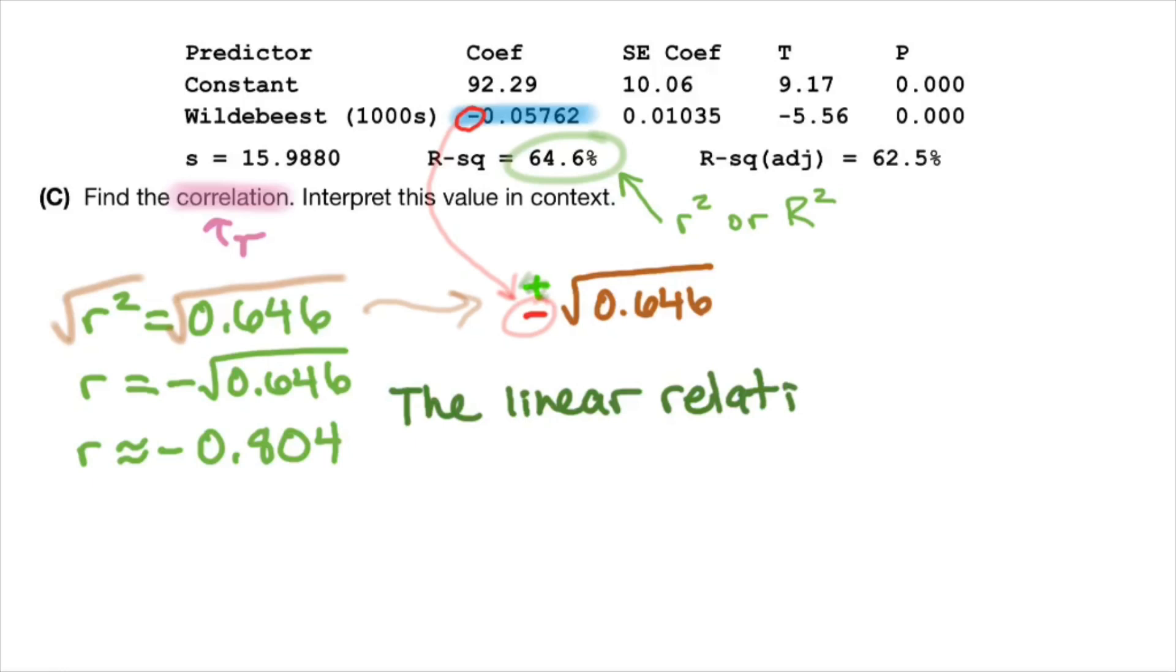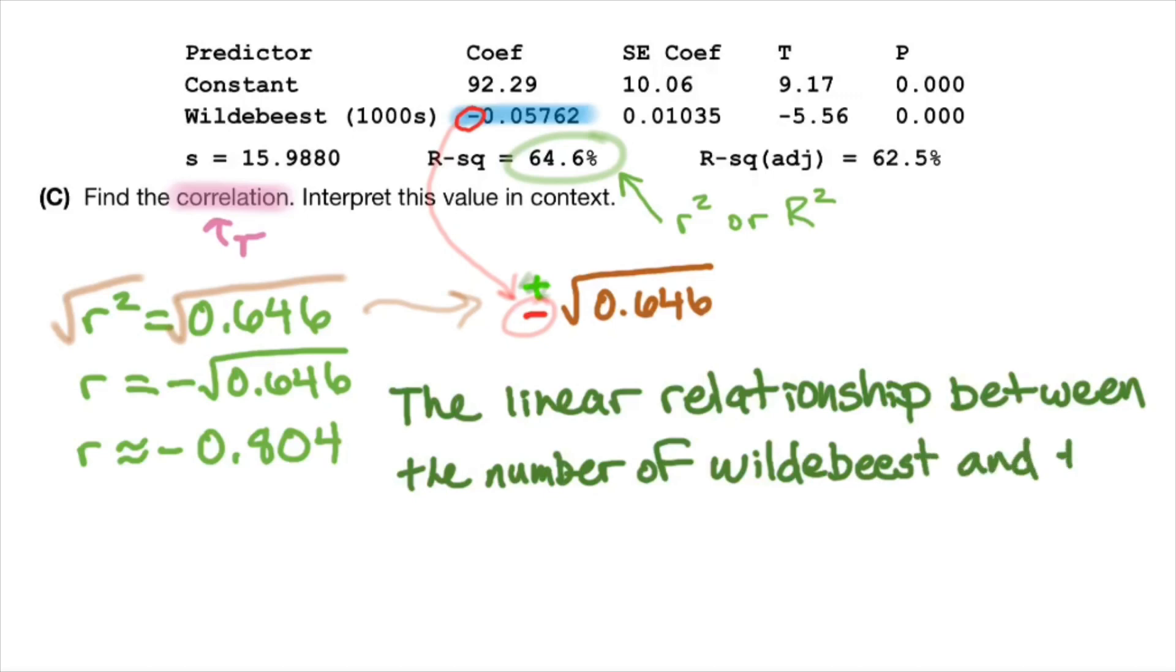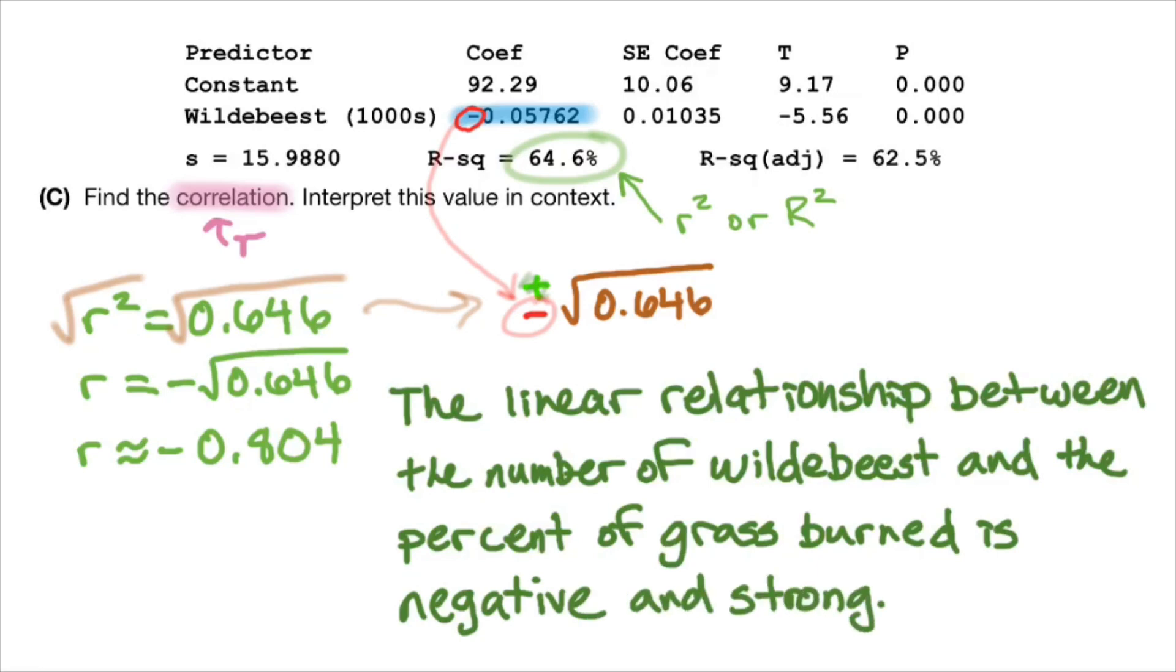So to do that, we can just say the linear relationship between the number of wildebeest and the percent of grass burned is negative and strong. Let me highlight a few things that are crucial in this sentence. The first is linear.